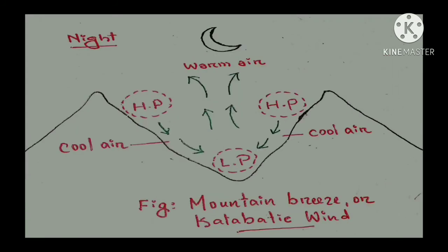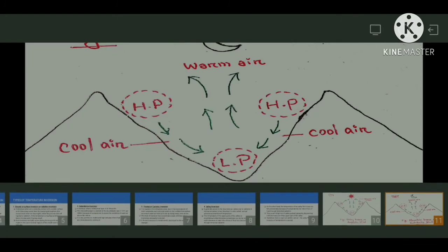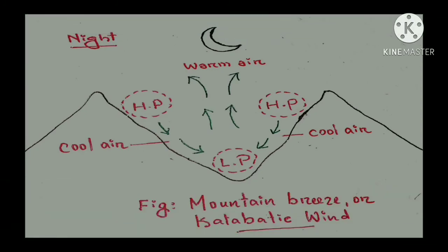During long winter nights, the valley gets heated and the slope of the mountain becomes cold. That pushes the wind to move from the mountain slope to the valley. This wind is called mountain breeze or katabatic wind, where you find the conditions of temperature inversion.